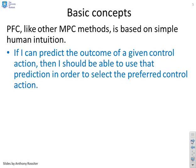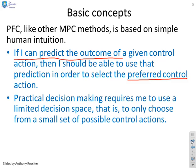Basic concepts: PFC, like other predictive control methods, is based on simple human intuition. If I can predict the outcome of a given control action, then I should be able to use the prediction to select the preferred control action — and that's exactly what was going on in the GPC videos. Practical decision making requires a limited decision space: we want to choose from only a small set of possible control actions, because otherwise it gets too complicated. Humans achieve very precise control of the world around us despite using limited decision spaces, and the key thing about PFC is how we limit our decision space within our predictions.